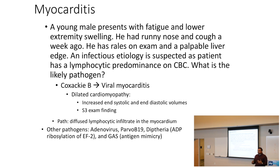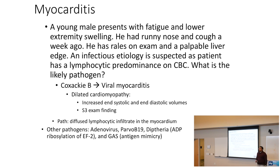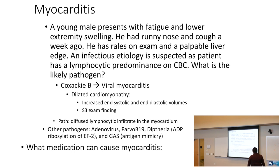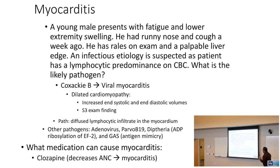Viral myocarditis pathology shows lymphocytic infiltration into the myocardium. Other causes include adenovirus, parvovirus B19, diphtheria, and group A strep — group A strep causes myocarditis through antigen mimicry. Clozapine can also cause myocarditis by decreasing neutrophil count, causing mild immunosuppression.